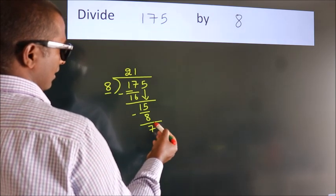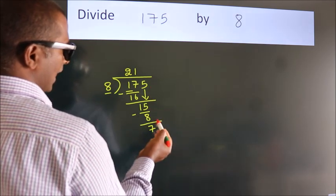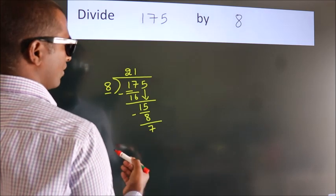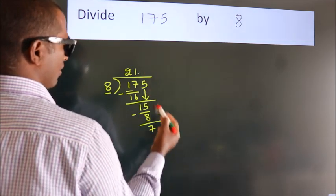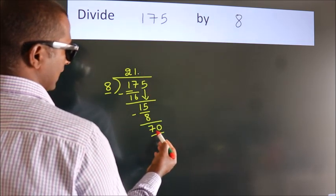After this, no more numbers to bring down. So what we do is, we put a dot and take 0. So, 70.